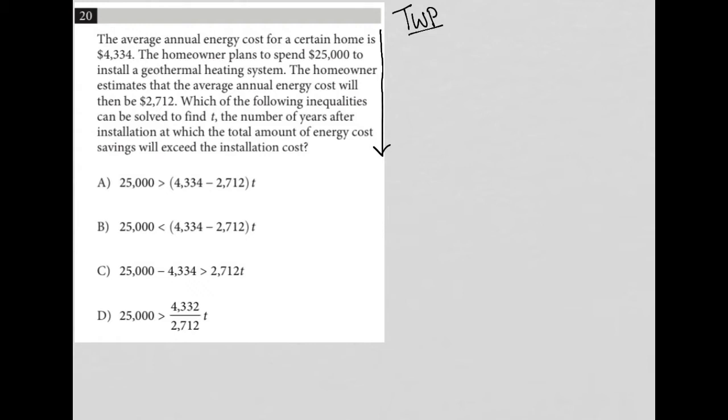So the average annual energy cost for a certain home is $4,334. So I'm going to just write average energy cost equals $4,334. The homeowner plans to spend $25,000 to install a geothermal heating system. So I'm going to just say geothermal equals $25,000.